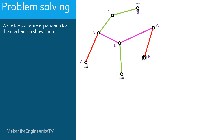First, we need to determine how many loop closure equations are required for the kinematic problem. To this aim, we need to determine the number of unknowns of the position problem. We need to define an angle for each of the 7 moving bars. Thus, 7 parameters are required to define completely and uniquely the position of the mechanism. However, depending on the mobility, some parameters should be the inputs.